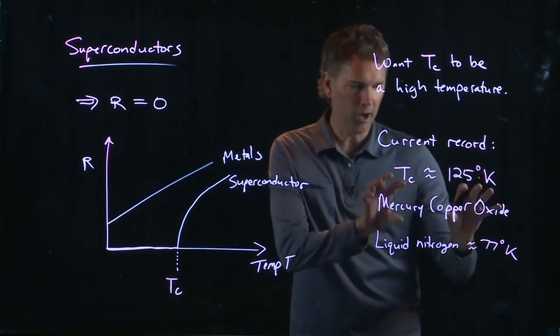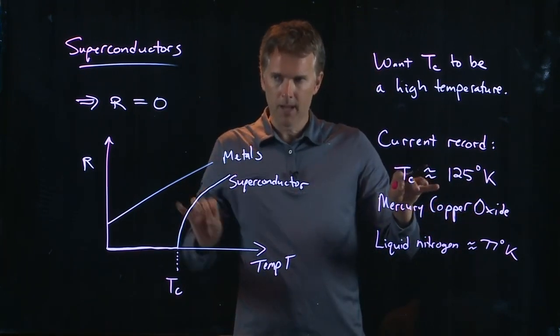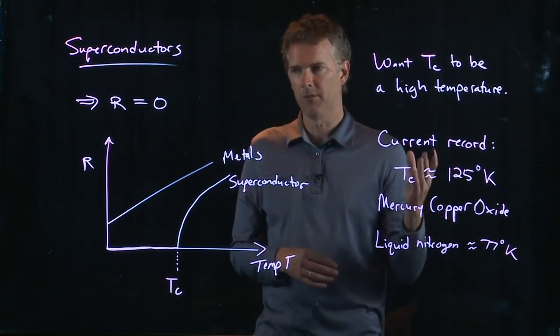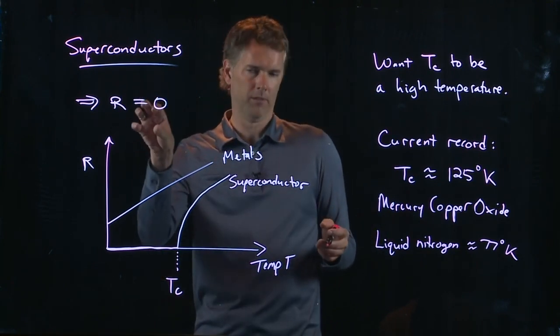So, if you take some of this stuff, mercury copper oxide, and you make a wire out of it, and dip it in liquid nitrogen, all of a sudden it becomes a superconductor. It can conduct electricity with zero resistance.